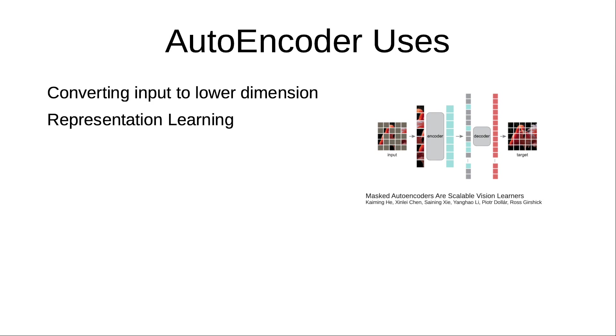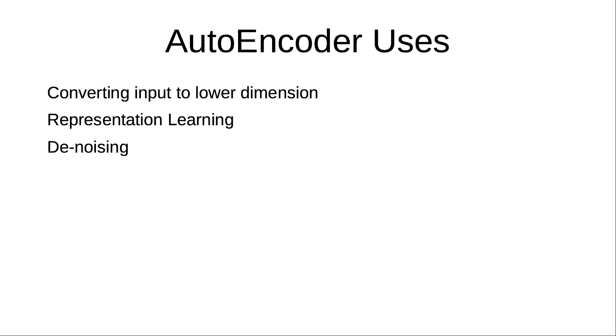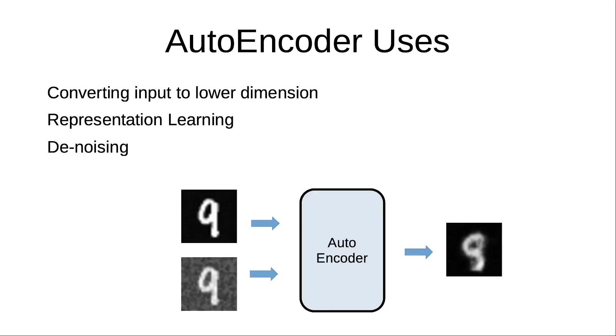We could also use it as a denoising network by training the autoencoder to reconstruct the image from a noisy version of the input. This will end up teaching the network to denoise an image.